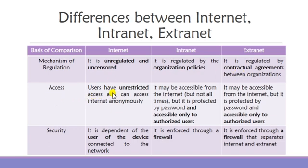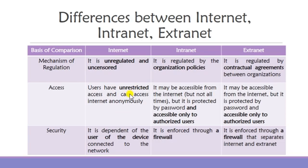Based on assets: internet users have unregulated access and can access it anonymously — users can even create a false identity, which is one of the disadvantages of internet. For intranet, it may sometimes be accessible from the internet, but it is protected by a password and accessible only to authorized users. For extranet, external users may access it via the internet, but it is also protected by a password and accessible to only authorized users.